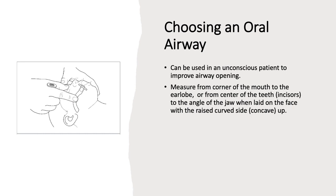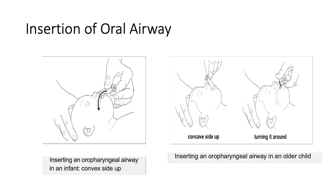If the airway is not completely obstructed but air movement is poor, suction secretions if available, and place a Guedel or nasopharyngeal airway if obstruction is from the tongue or upper airway. These should only be used in unconscious patients. To size a Guedel airway, measure from the corner of the mouth to the earlobe, or from the center of the incisors to the angle of the jaw. In an infant, insert convex side up in one movement; in a child greater than one year, insert concave side up and then rotate. Remember that in many settings, intubation is not available, so adjunct airways are critical.